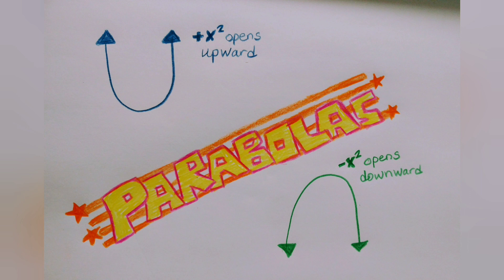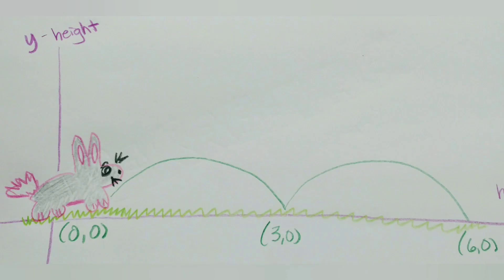There are two kinds of parabolas. Equations containing positive x squared open upward like a u. Equations containing negative x squared open downward like a lowercase n. The bunny's hop definitely opened downward, so the equation needed a negative in front.